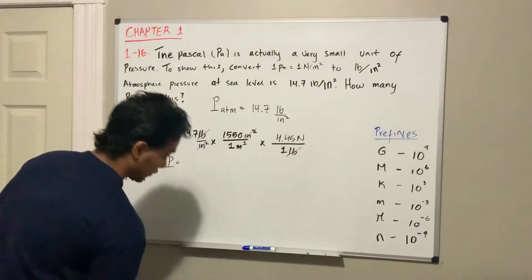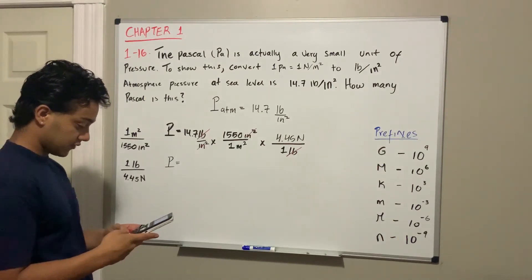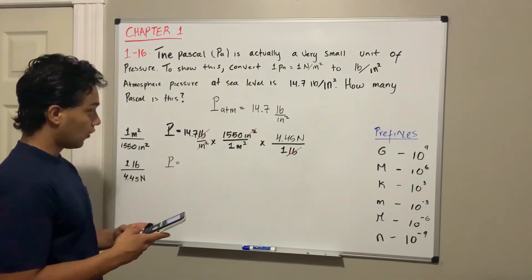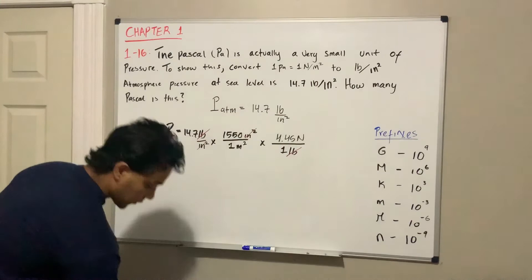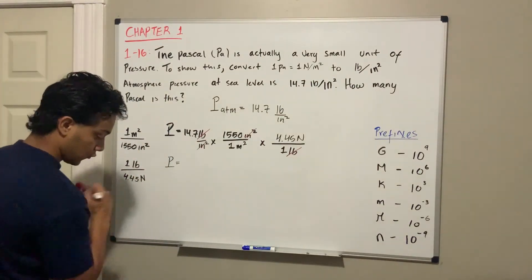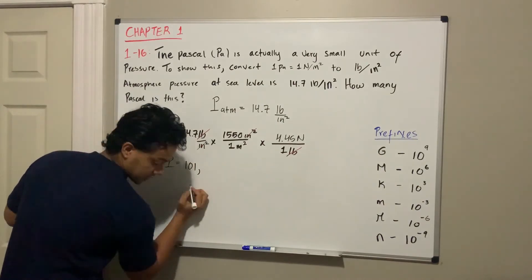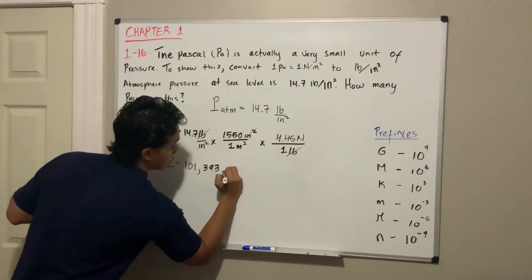We're going to use our calculator. We do 14.7 times 1550, and also multiply by 4.45, and we're left with 101,393 Pascals.